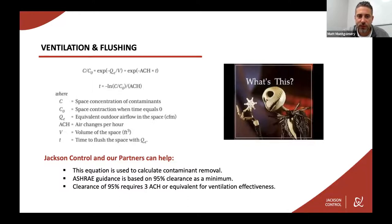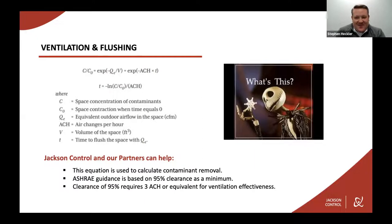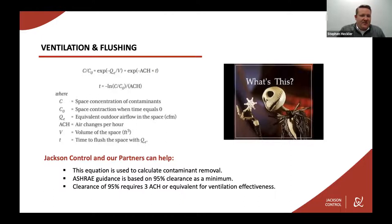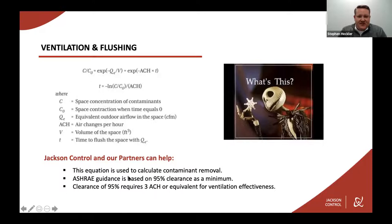I'm going to kick it over to Stephen Heckler to talk about ventilation and flushing. Ventilation and flushing starts with math. What we're looking for is ACH, which is air changes per hour. The equation shown and its variables are used to calculate contamination removal. You use that equation to look for a 95% clearance as a minimum, which is ASHRAE guidelines out of 62.1, and that typically requires three air changes per hour or equivalent. Whether you're using equipment or openings like doors and windows to get those air changes, you can run that calculation to figure out how often you need to move air.